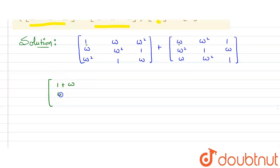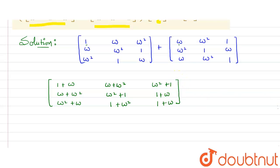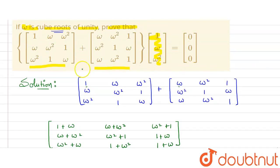Continuing the addition: omega plus omega squared, omega squared plus omega, omega plus omega squared, omega squared plus one, one plus omega squared, omega squared plus one, one plus omega, and omega plus one (or one plus omega). This is the value of the addition of these two matrices.